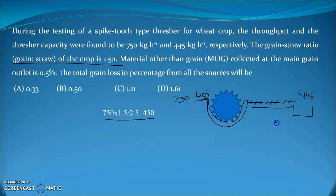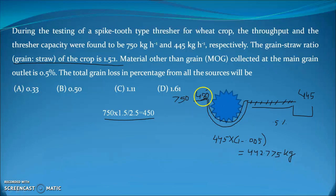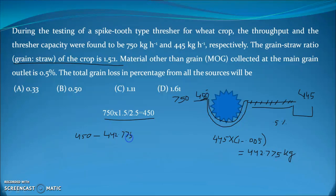The problem also states that 0.5% at the grain outlet is material other than grain (MOG). So the actual grain in the outlet is 445 × (1 − 0.005) = 445 × 0.995 = 442.775 kg. So 442.775 kg is the actual grain output, and 450 kg was the grain input. The rest is the loss, so from 450 to 442.775 is the grain loss.